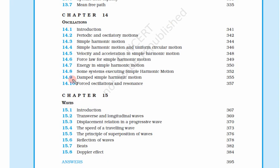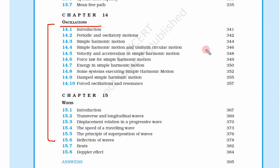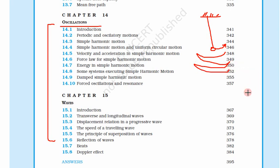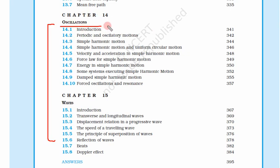Chapters 14 and 15 are very different from the rest of the second book. All the other chapters dealt with properties of matter, but here we deal with waves — not matter, but waves. First, oscillations: if you have a simple pendulum and displace it to one side and release it, it will keep oscillating. Chapter 14 is about these oscillations.